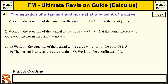The equation of a tangent and normal at any point of a curve. This is part of the calculus section of my Ultimate Revision Guide of Further Maths GCSE. If you want to go back to the index for calculus, you can click on the index button, and any past exam questions I've done on this topic, I'll put links to down in the bar below.